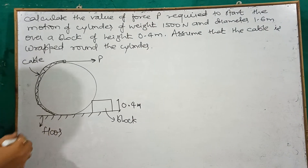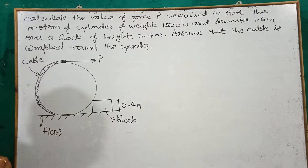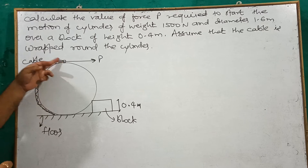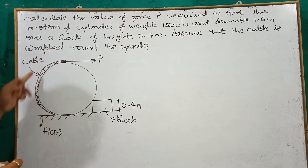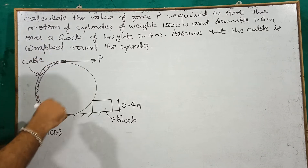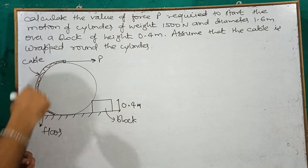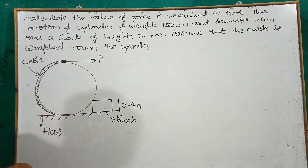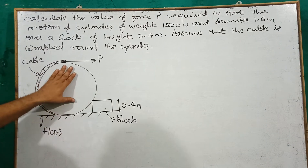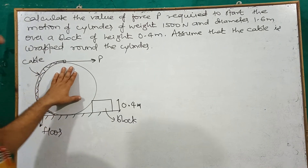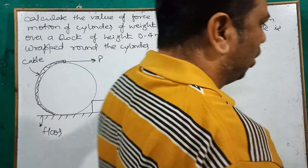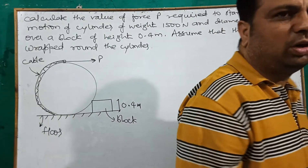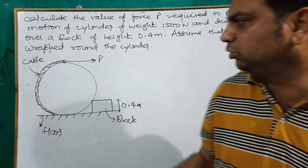Assume that the cable is wrapped around the cylinder. We have to find the value of P that will roll this cylinder over the block — that is, roll this roller over a step or block.